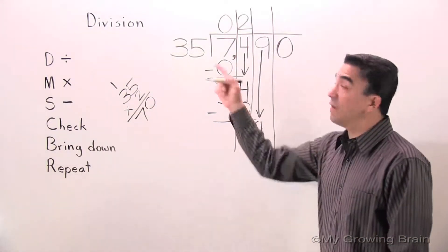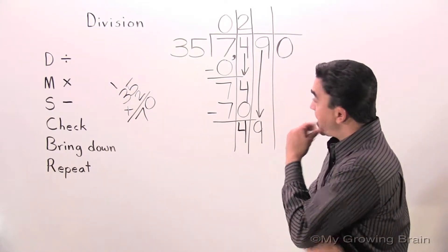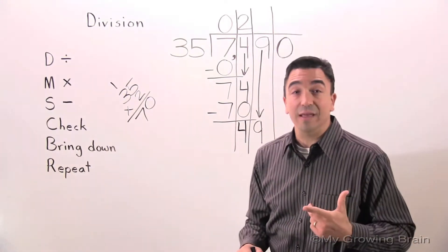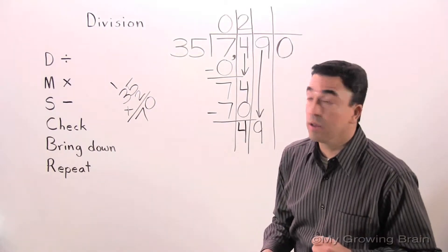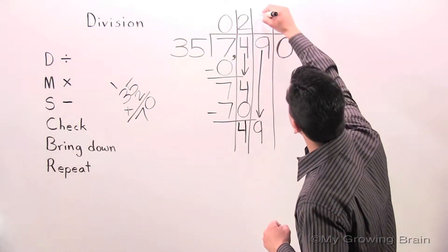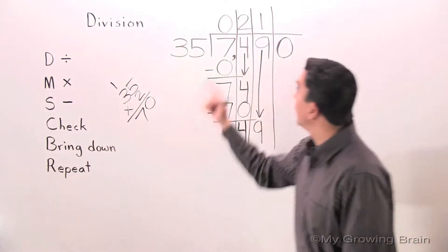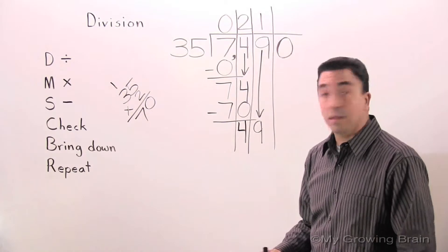49 divided by 35, or 35 into 49. Well, I know that 35 times 2 is 70 and that's too much. So it's got to be 35 times 1. Next step. Multiply. 35 times 1 equals 35.